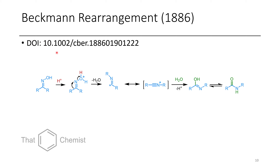Let's look at the Beckmann rearrangement — this is a reference to the original paper where Beckmann reported this transformation. Using a Lewis acid, an activated oxime, or just an acid, we can make this hydroxy into a good leaving group. Through a 1,2-shift of this oxime derived from a ketone — a ketoxime — the R group is able to shift onto the nitrogen. Moving the lone pair from the iminium onto this carbon gives us a nitrilium, which is like an alkylated nitrile. If you react the nitrilium with water as a nucleophile, you get your amide as a product upon keto-enol tautomerism.